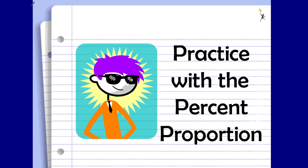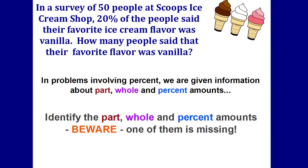Today we're going to practice with the percent proportion. We've already learned about the percent proportion, and the percent proportion is the part to whole equals percent out of a hundred. So in problems involving percent, we're given information about the part, the whole, and the percent amounts, which is why we have part to whole equals percent out of a hundred as our percent proportion.